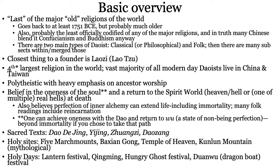The closest thing Taoism has to a founder is a person named Lao Zi. If he existed, he lived around 1751 BCE, and is credited with writing down the Dao De Jing, the main book of classical Taoism. But a lot of stories about him are fantastical — my personal favorite is that he existed in his mother's womb for 60 years and was born an adult, which sounds really painful. All accounts do agree on one thing though: he had very large ears. That tends to be the common trait. That's better than Confucius — primary sources on Confucius just say he was really, really ugly.